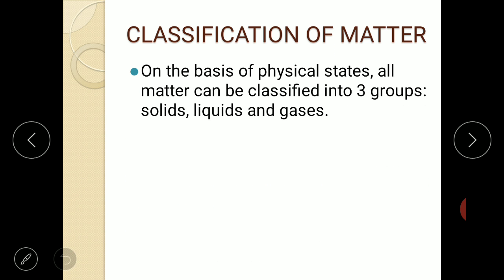On the basis of physical states, all matter can be classified into three groups: solids, liquids, and gases. Examples of solids include sugar, sand, iron, wood, rock, minerals, and ice. Examples of liquids include water, milk, oil, kerosene, petrol, and alcohol. Examples of gases include air, oxygen, hydrogen, carbon dioxide, and steam. In other words, matter exists in three physical states: solid, liquid, and gas.